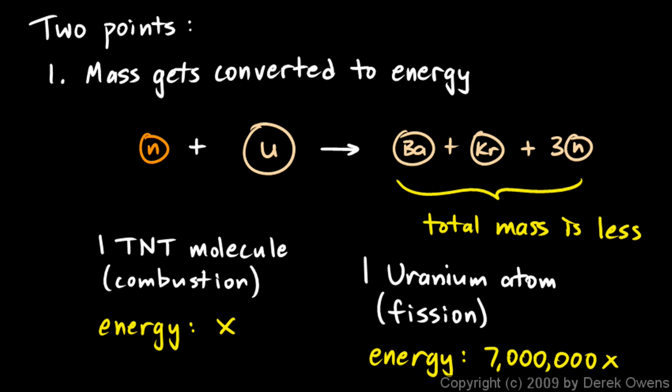Why is there so much energy? Well, it goes back to Einstein's famous equation: E equals MC squared. The energy is equal to the mass times the speed of light squared. C is the speed of light, and C is huge. So C squared is extremely huge.